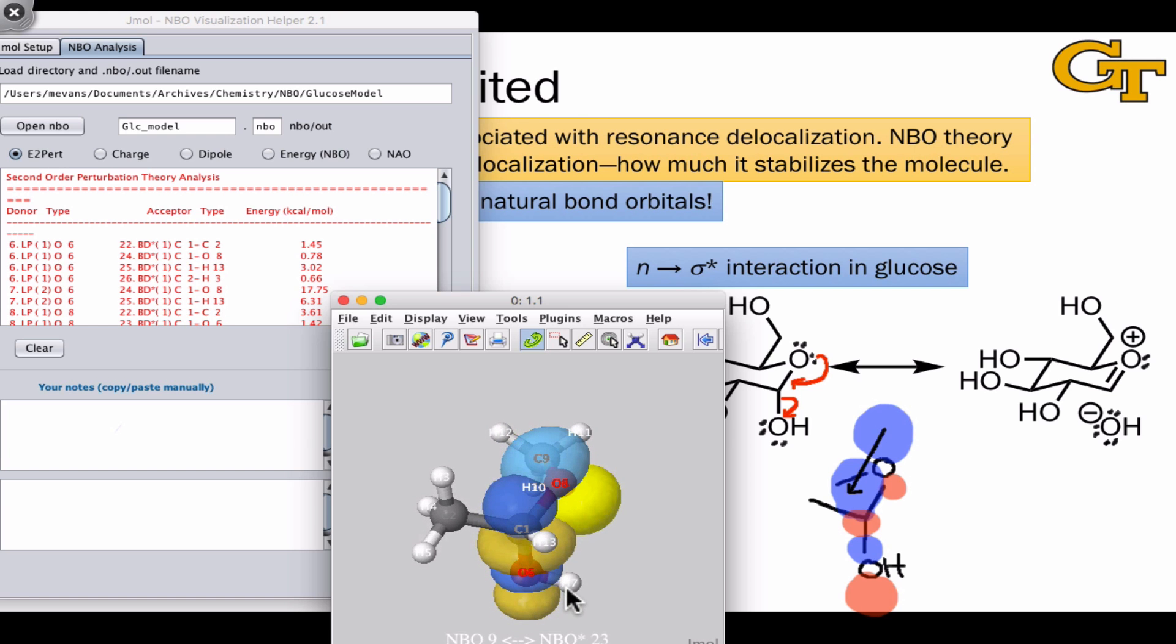One point to note about this sigma-star orbital that we didn't do a good job of drawing in this picture is that the lobe on carbon is much bigger than the lobe on oxygen. So there's overlap both between the upper lobe of the P orbital with that kind of backside lobe of the sigma-star antibonding orbital, and between the lower lobe of the P orbital and the internal lobe of the sigma-antibonding orbital at carbon.